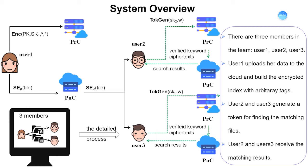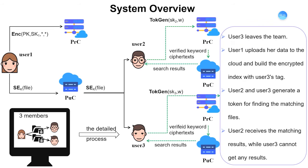Here is the system overview of our proposed scheme. There are three members in a group sharing files through the cloud server. For example, User1 acts as data sender, sending encrypted files to the public cloud and an encrypted index to the private cloud. Then User2 and User3 generate tokens to find matching files and receive the matching results. Once User3 leaves the group, he will never be allowed to access data. To this end, User1 builds the encrypted index with User3's tag punctured, so that only User2 can get matching results after sending a search token.